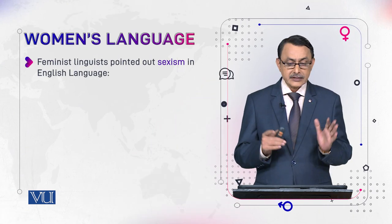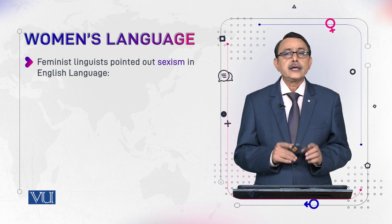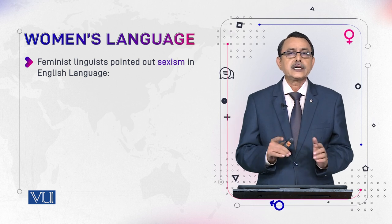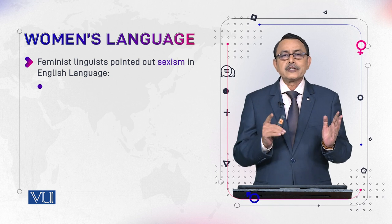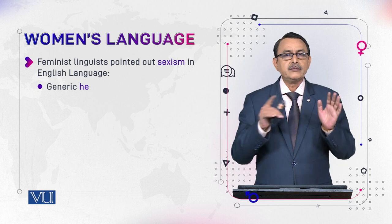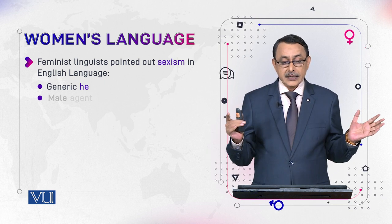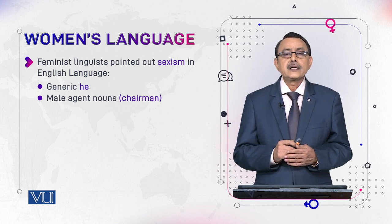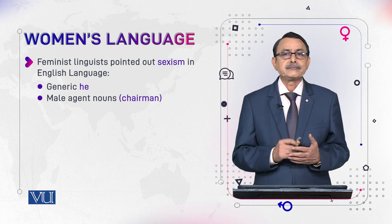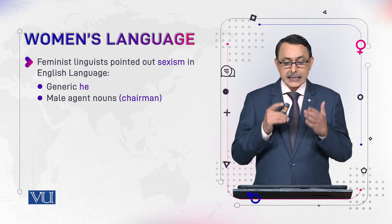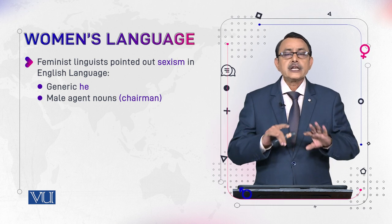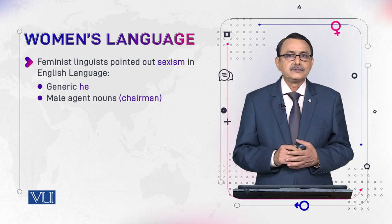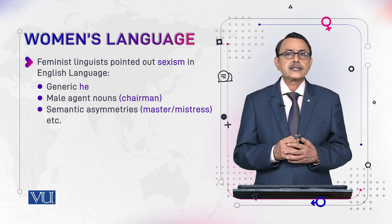The second effect was that feminist linguists pointed out that in English we have certain problematic terms. For example, they pointed out the generic 'he,' used for both males and females, and male agent nouns like 'chairman' and 'watchman.' Agent nouns refer to a person who does something — a doer. These male terms covered both men and women, which was considered sexism.